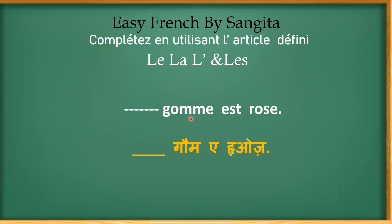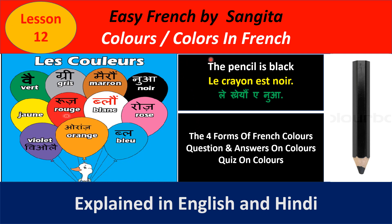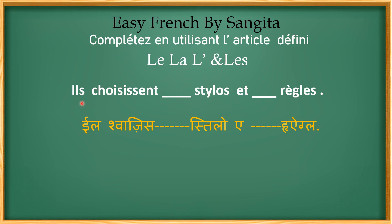The next sentence is: ___ gomme est rose — the rubber is pink. Gomme is a noun and it is feminine, so the article comes in front of the noun: la gomme. So: la gomme est rose. There is also a video on colors in French in the description box, which covers masculine, feminine, singular, and plural forms of French colors, with a quiz as well.